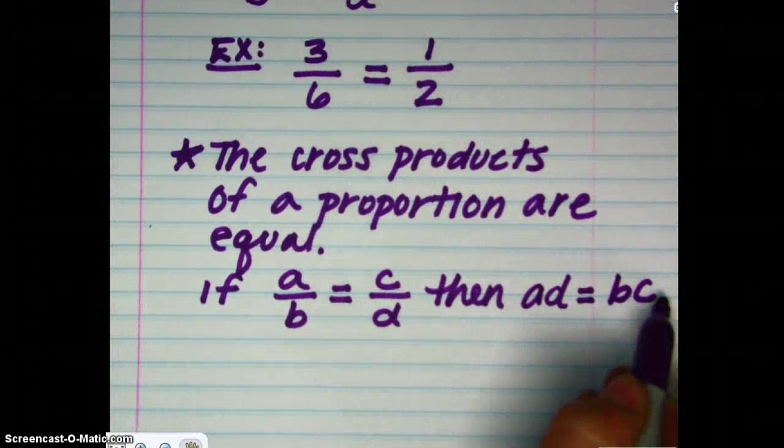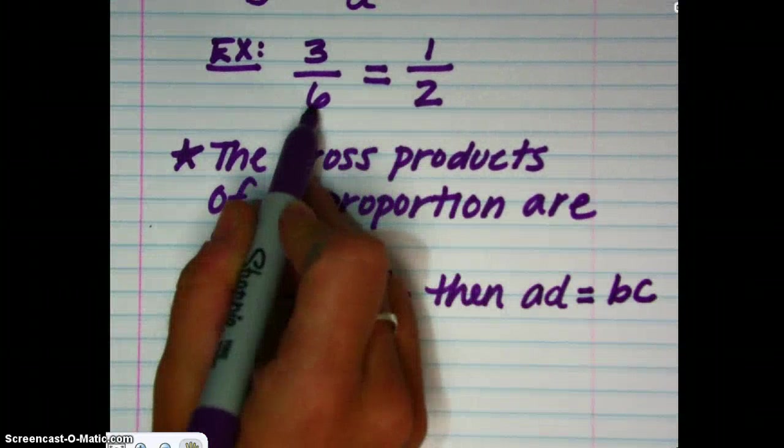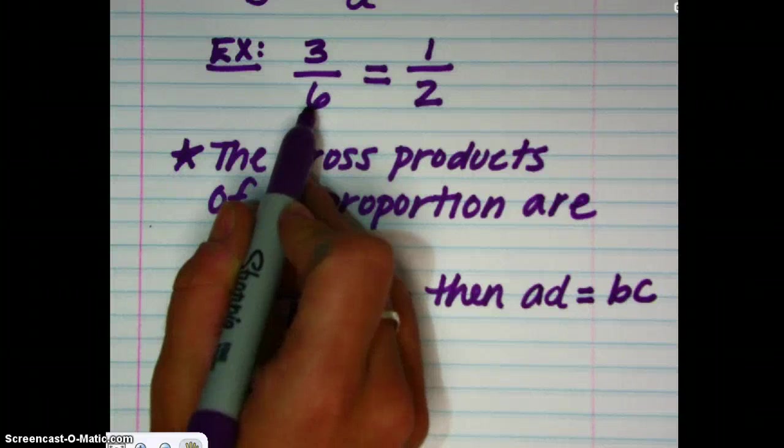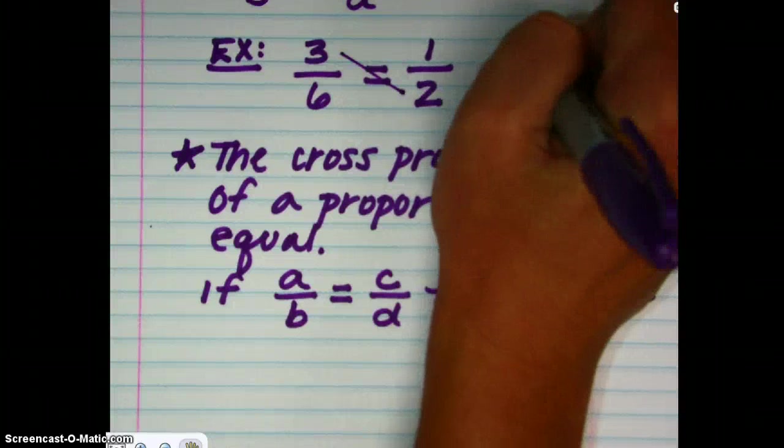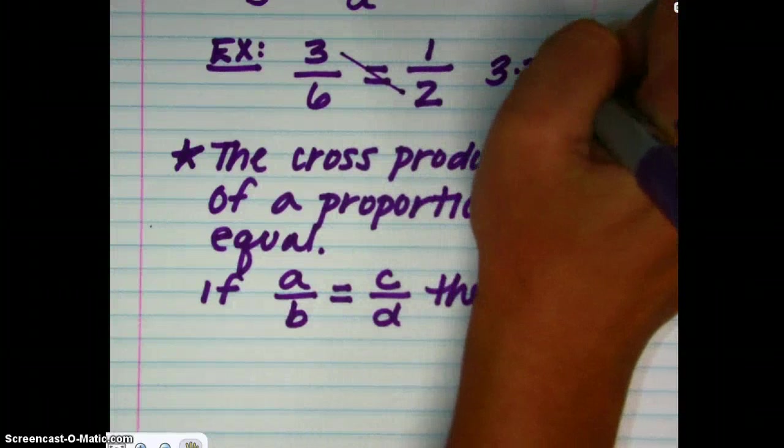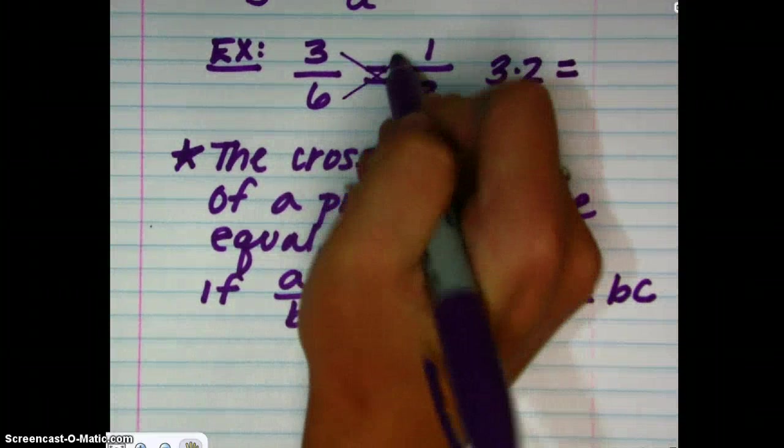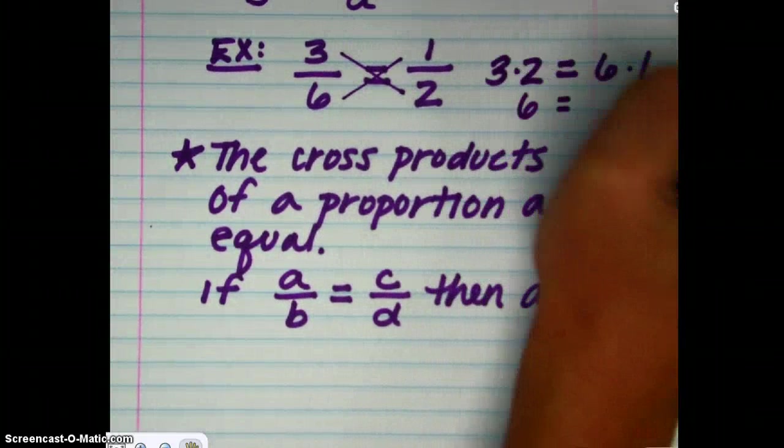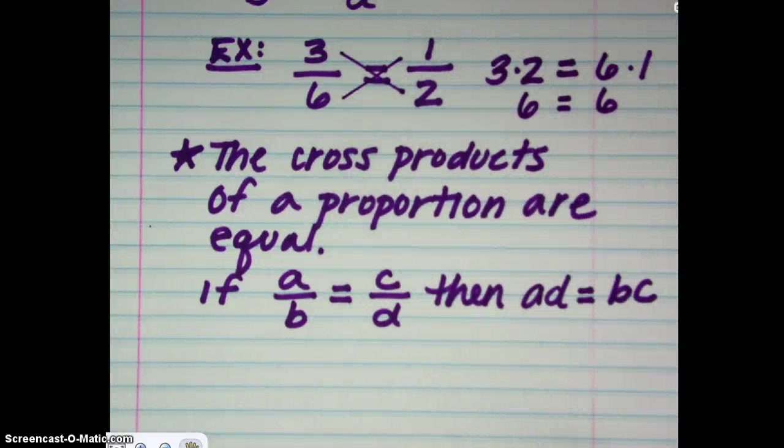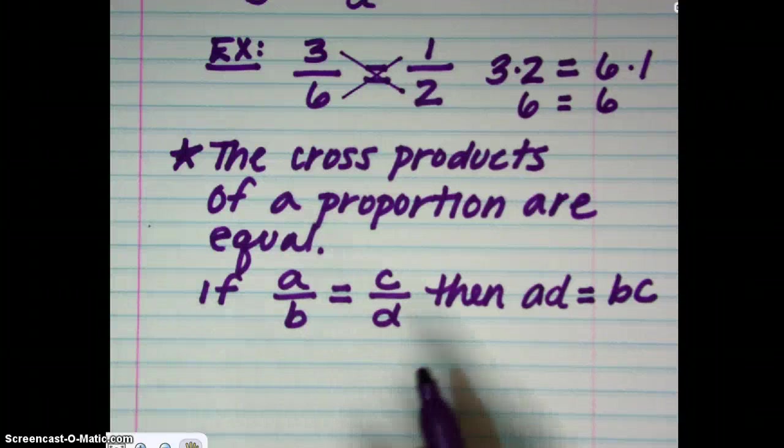Now, looking at the previous example, this proportion here, we can see how that works. The cross products, 3 times 2, are equal to the other cross products, 6 times 1. We can see that they both equal 6. And this is true of any proportion. So, we can use this idea, we can use this principle, to help us solve proportions.